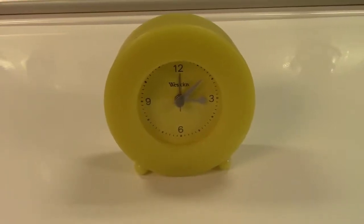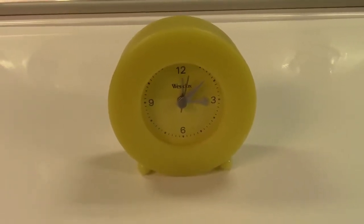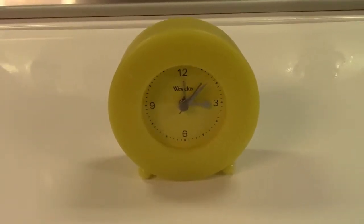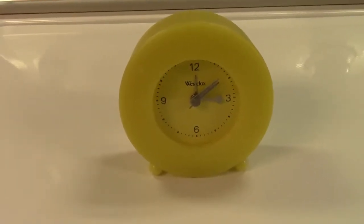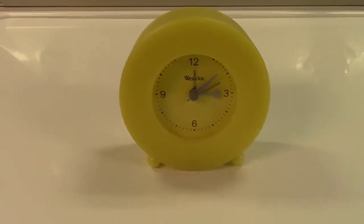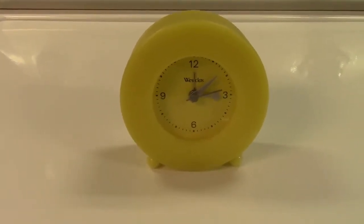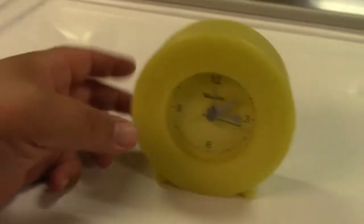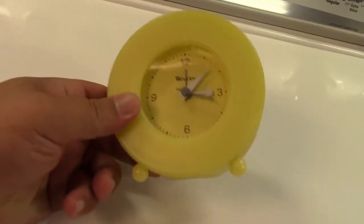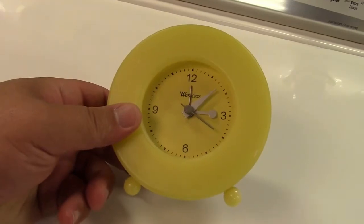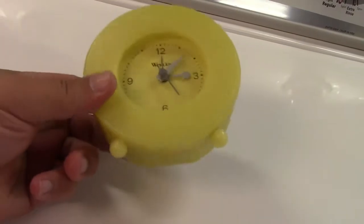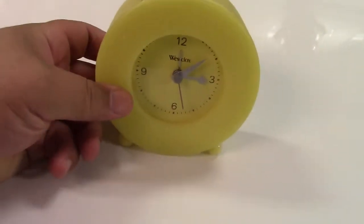Here is a Westclox analog clock. It's yellow and has no model number or anything. I went over the entire thing and it's got nothing. It's an ugly yellow alarm clock. I was actually given this as a gift by my wife's godmother. She had this laying around.